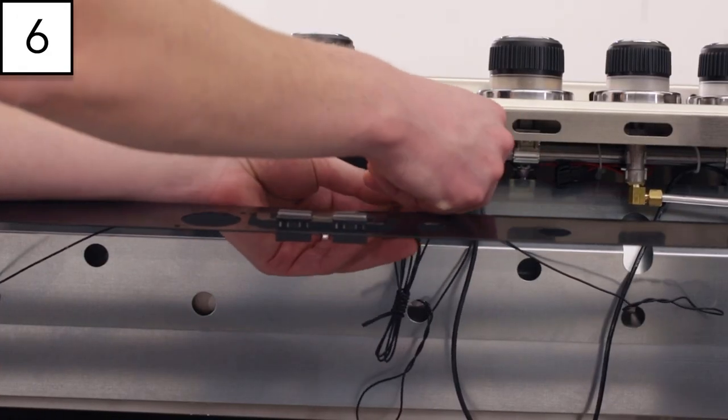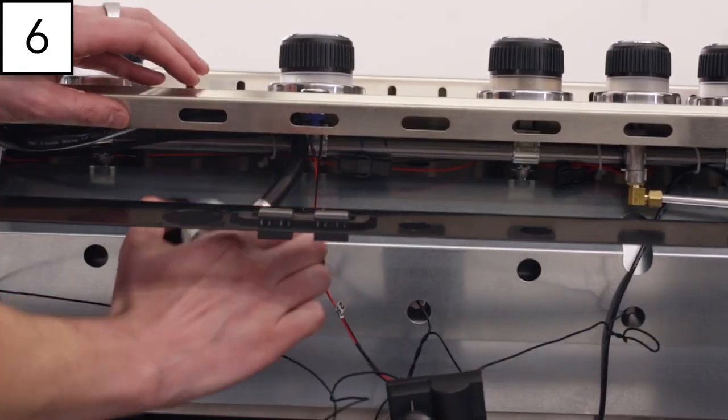Remove the twist ties securing the electrode wires and pull the hoses through the top opening of the cabinet.